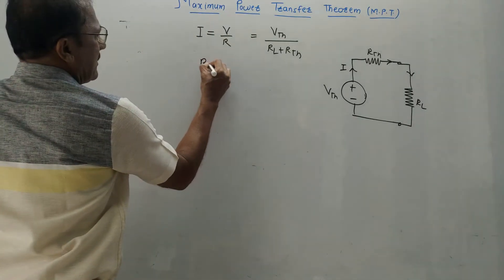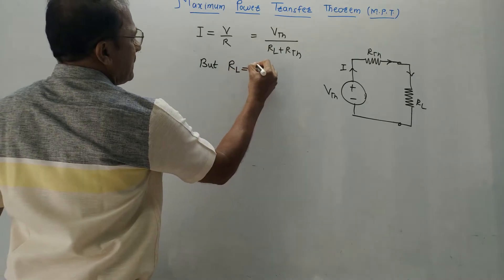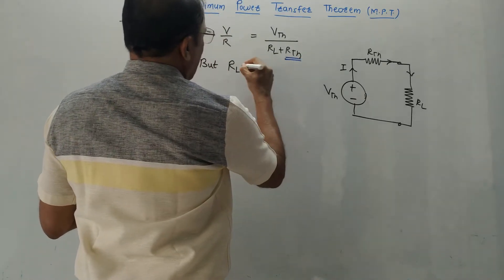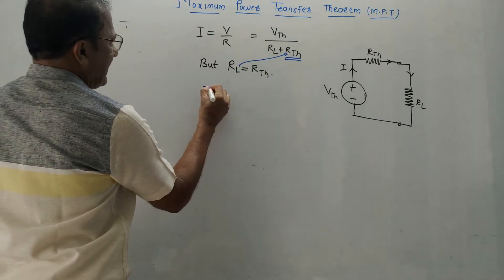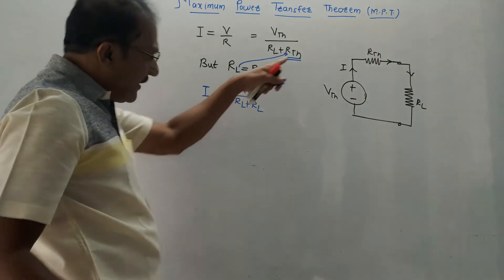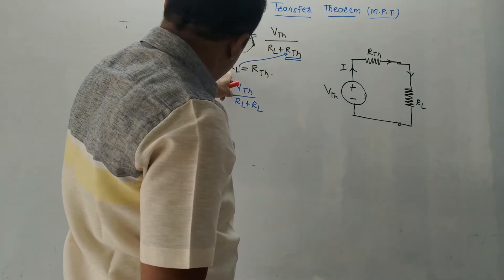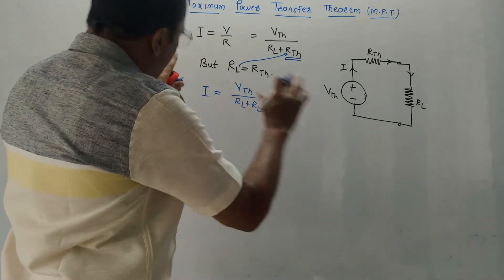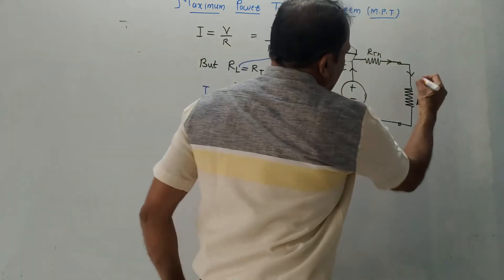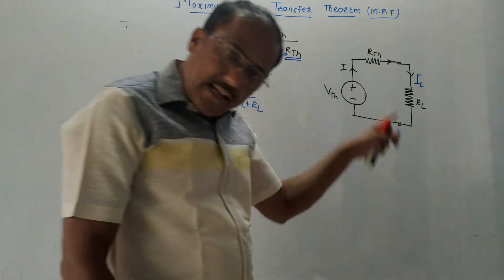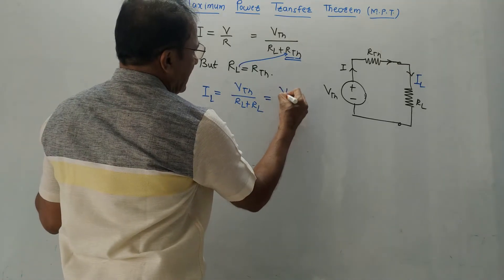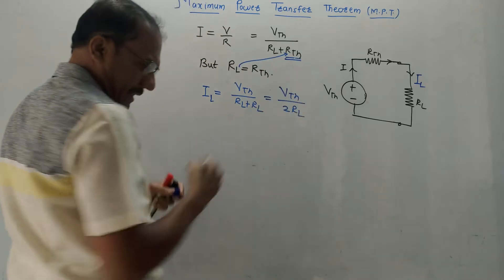We have the condition for maximum power transfer: RL must be equal to RTH. So instead of RTH, I will write RL. The equation can be modified as I equals VTH upon RL plus RL. Since this current flows through the load resistance, I will denote it by IL — the load current. This can be simply written as IL equals VTH upon 2RL.